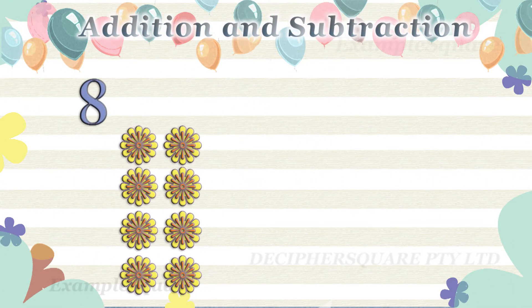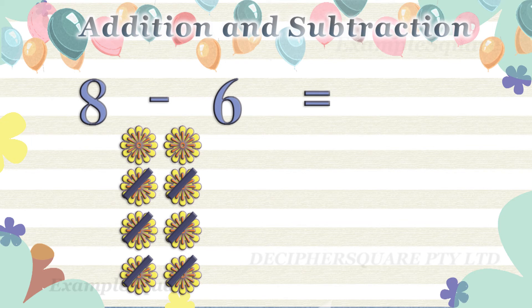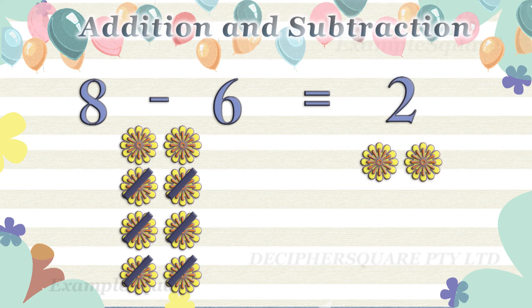There are eight flowers. How many flowers are left if six flowers are taken away from eight flowers? If six flowers are taken away from eight flowers, then two flowers are left. Eight minus six equals two.